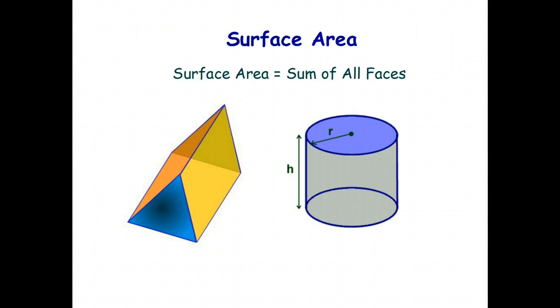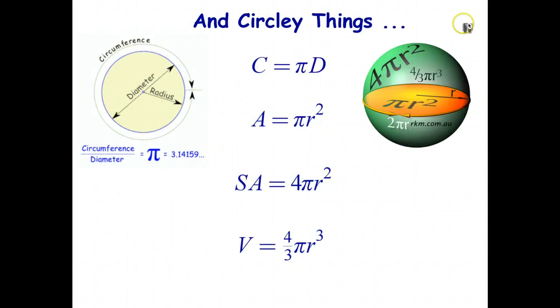Now, finally, we have to have some special formulas for what I call circly things. So, the circumference of a circle, pi times diameter. Note that I used that formula rather than 2 pi r, because 2 pi r looks too much like pi r squared.